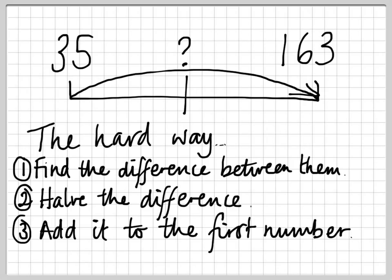Imagine you've got to find halfway between 35 and 163. Here comes the hard way. First of all, find the difference between the two numbers. So 163 take away 35.